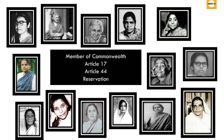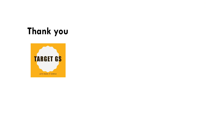Because of the voices of these women leaders, India became a member of the Commonwealth in May 1949. Article 17 of the Constitution, which addresses untouchability, was made enforceable in a Court of Law. Article 44 of the Constitution calls for a Uniform Civil Code in the country because of these women. Reservation was launched on the basis of social and educational backwardness, but not economic backwardness. That is all about the 15 women members of the Constituent Assembly who represented the real power of feminism in India.